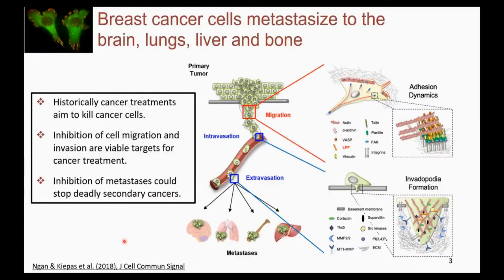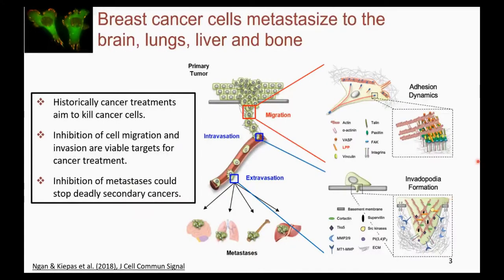Today I'll talk about two different structures and how the LPP protein plays a role in regulating them. The first is the focal adhesion, which links the cell to its extracellular matrix through contacts between the cytoskeleton and integrin receptors that bind to the ECM. The second is invadopodia — structures that invade perpendicularly down into the extracellular matrix, degrading the tissue so that cells can invade different tissues.